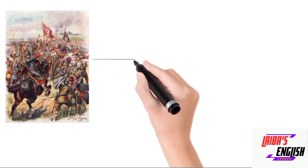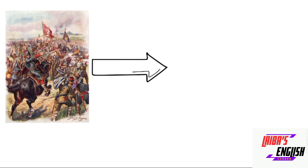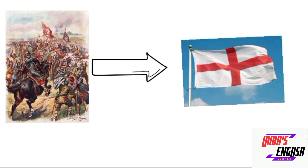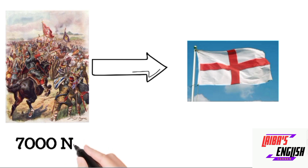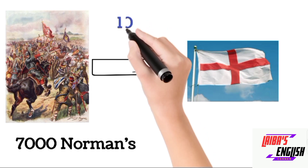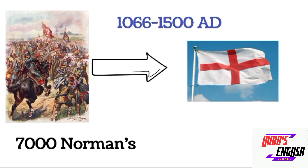Around the 11th century, when people from France invaded a country named England, it brought a lot of changes. At that time, 7,000 Normans — basically people belonging to France — invaded England. It happened almost in 1066 AD, and they ruled till 1580.